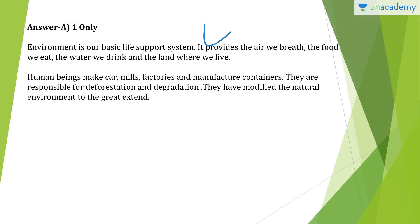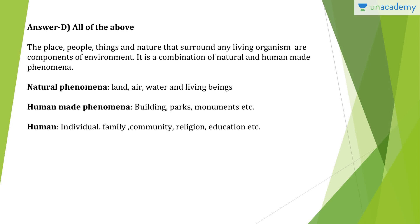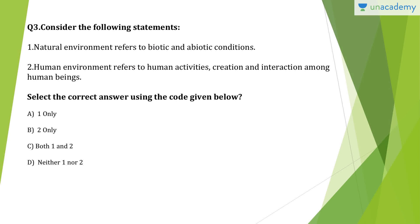Question 2: Consider the following statements — natural components, human-made components, and human beings are all components of the environment. Humans are also components of an environment. Biotic means living and abiotic means non-living. The answer is D, all of the above. Place, people, things, and nature that surround any living organism are all components of environment. It is a combination of natural and human-made phenomena.